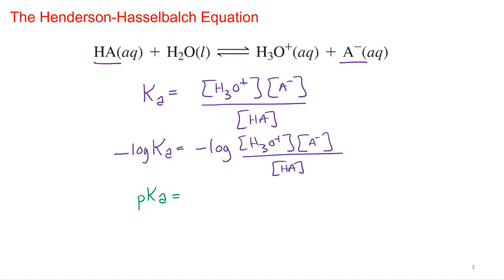And we know that the log of the product, log of a product is the same as the log of the sum of those two. So the log of x times y is the same as the log of x plus the log of y. So I'm just going to break it out using log rules. So I can say that the negative log of the hydronium plus the negative log of A minus over HA.